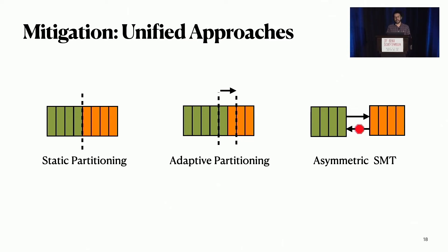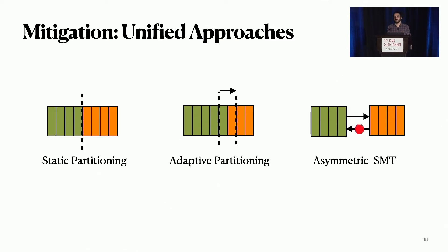The most obvious unified approach is static partitioning, which completely blocks the information flow between threads, but of course with a huge performance overhead. We propose adaptive partitioning, where you can change the boundary between the threads every adaptation period. This limits the communication between threads to once every adaptation period, but we show that even a very large interval can regain significant performance that was lost due to partitioning.